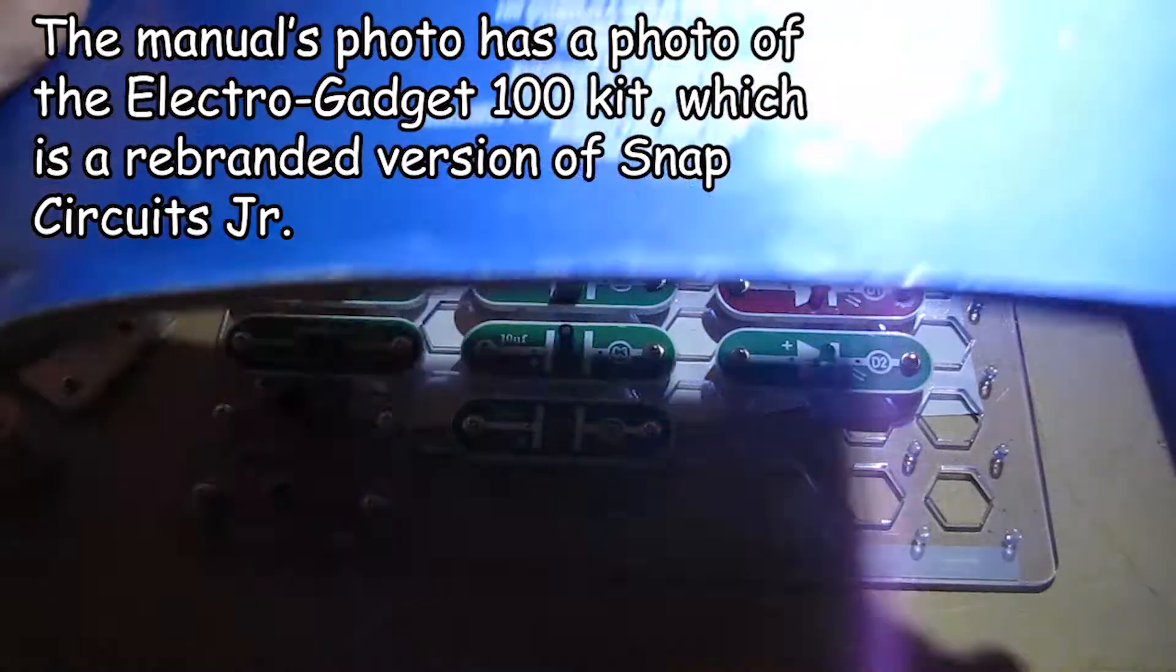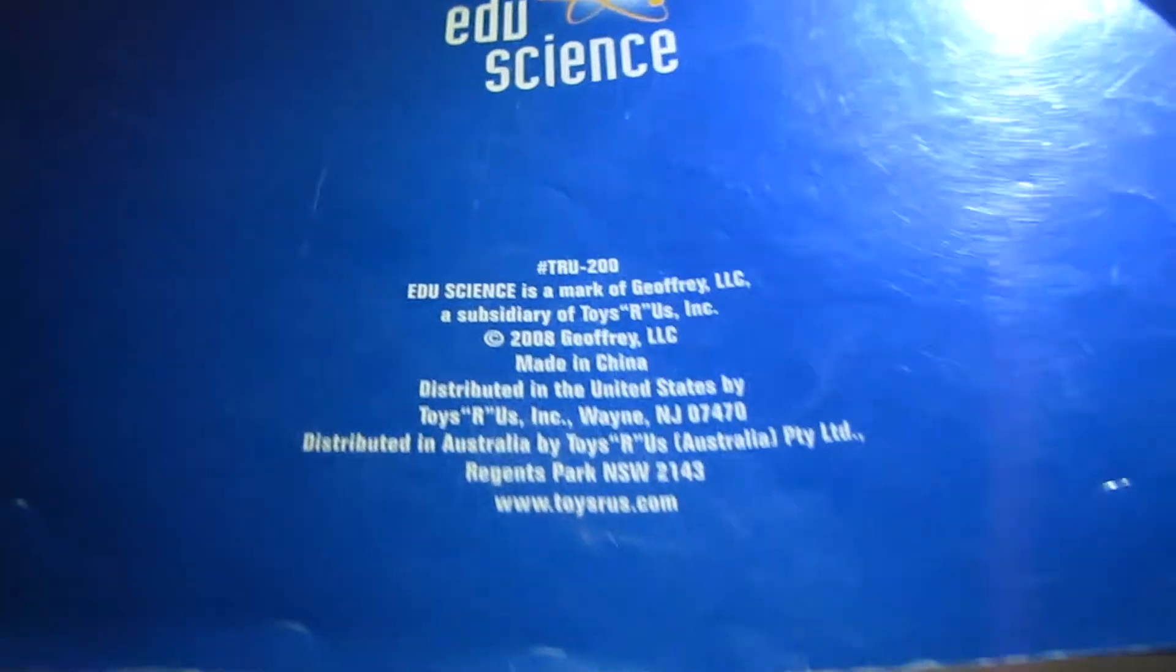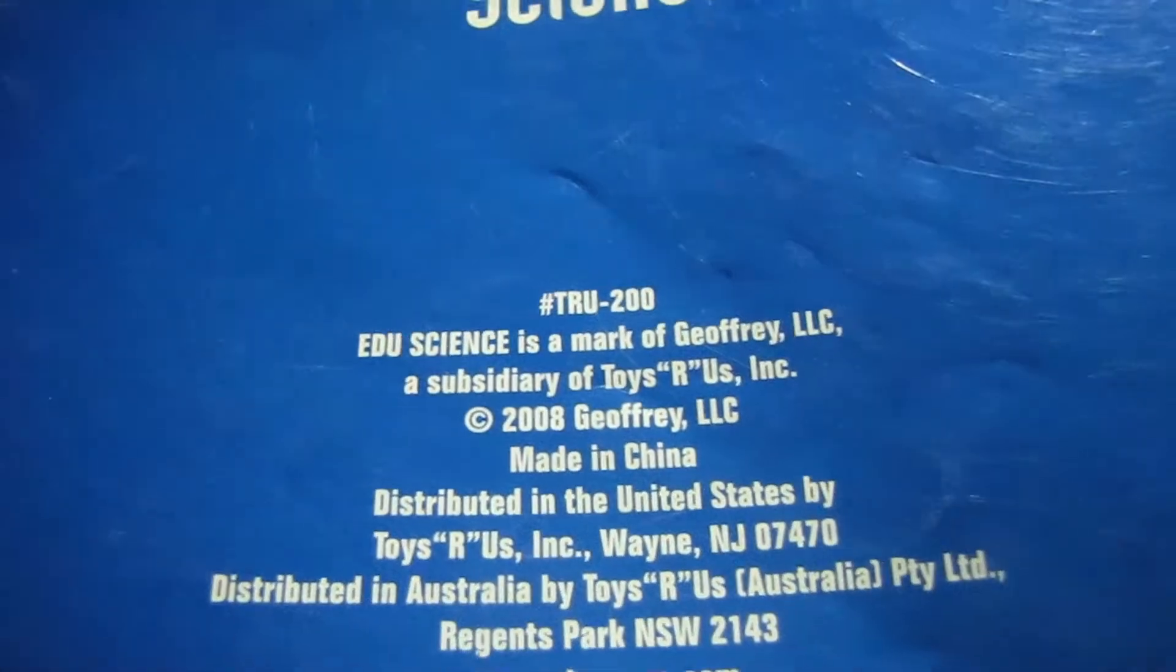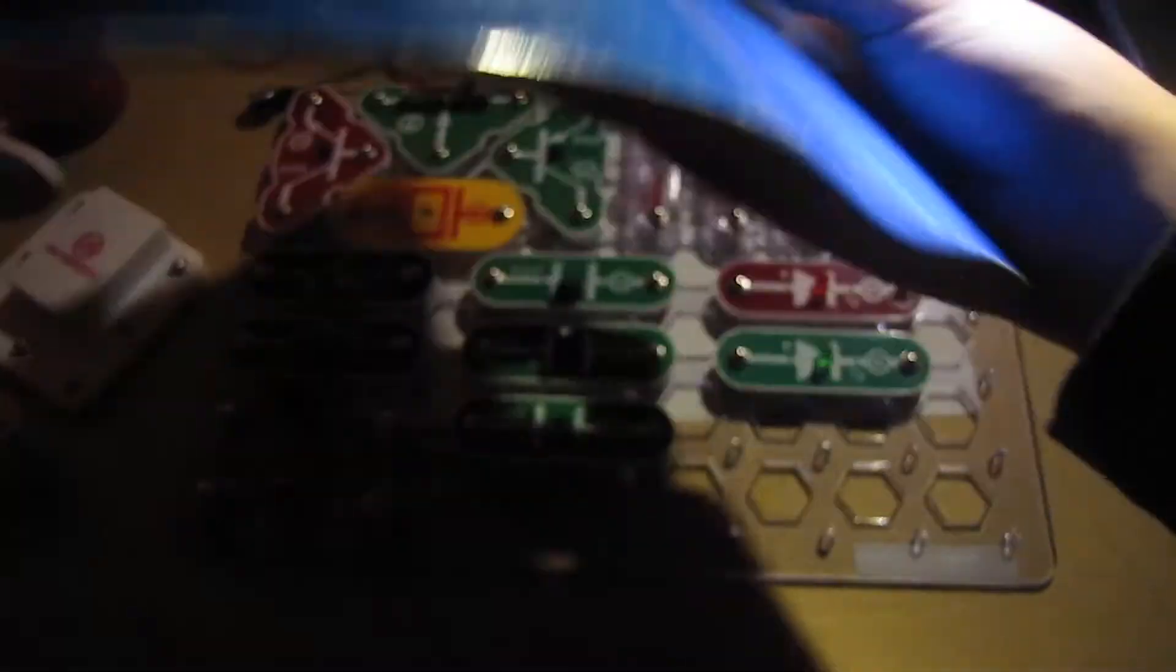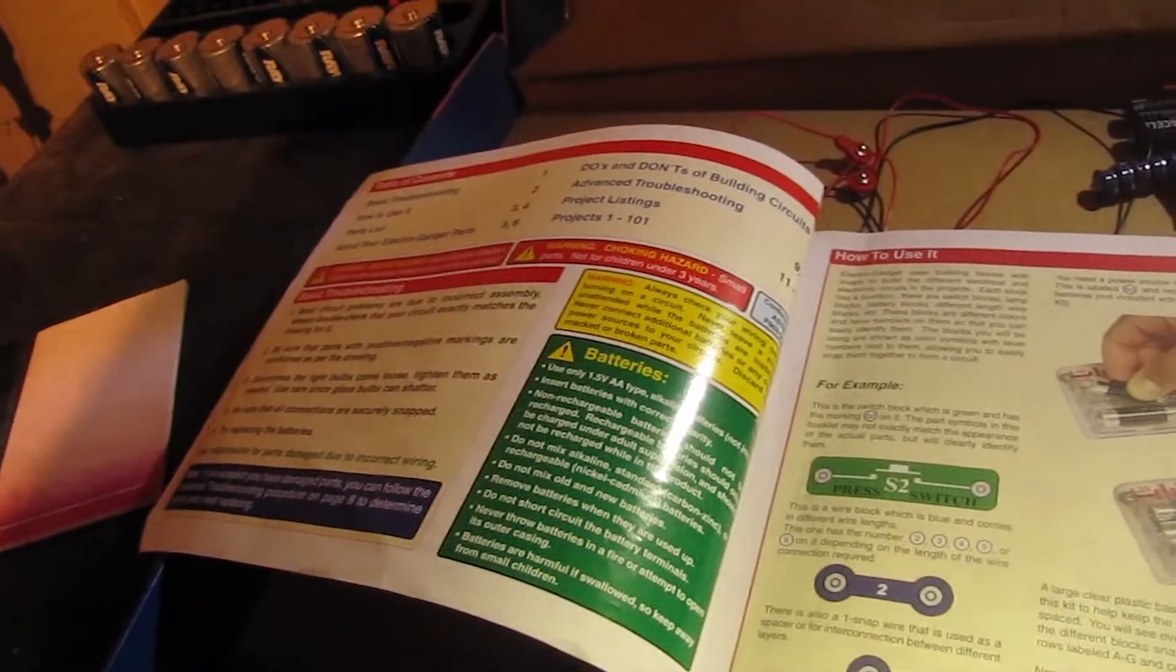And now let's take a quick look at the manual. As you can see, this is quite a big manual. As you can see on the back here, it has a different date on it. As you can see 2008, I got this set around 2010. It's apparently from Toys R Us. So as you can see, we got a quick manual here. Now, as you can see, we got our table of contents over there. We got some warnings, troubleshooting.